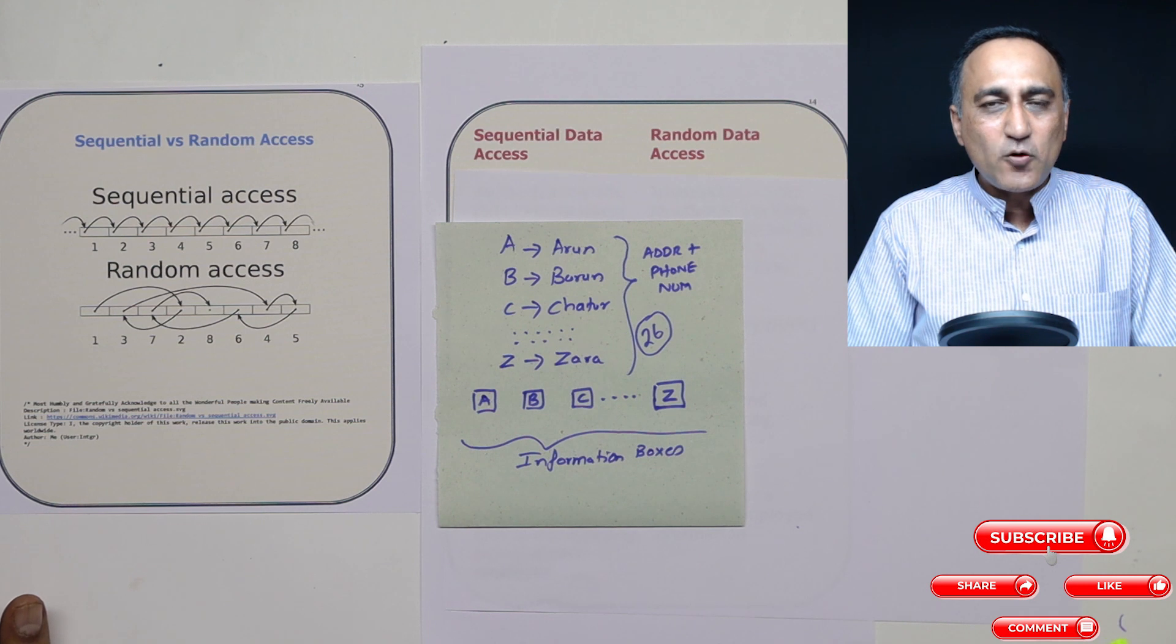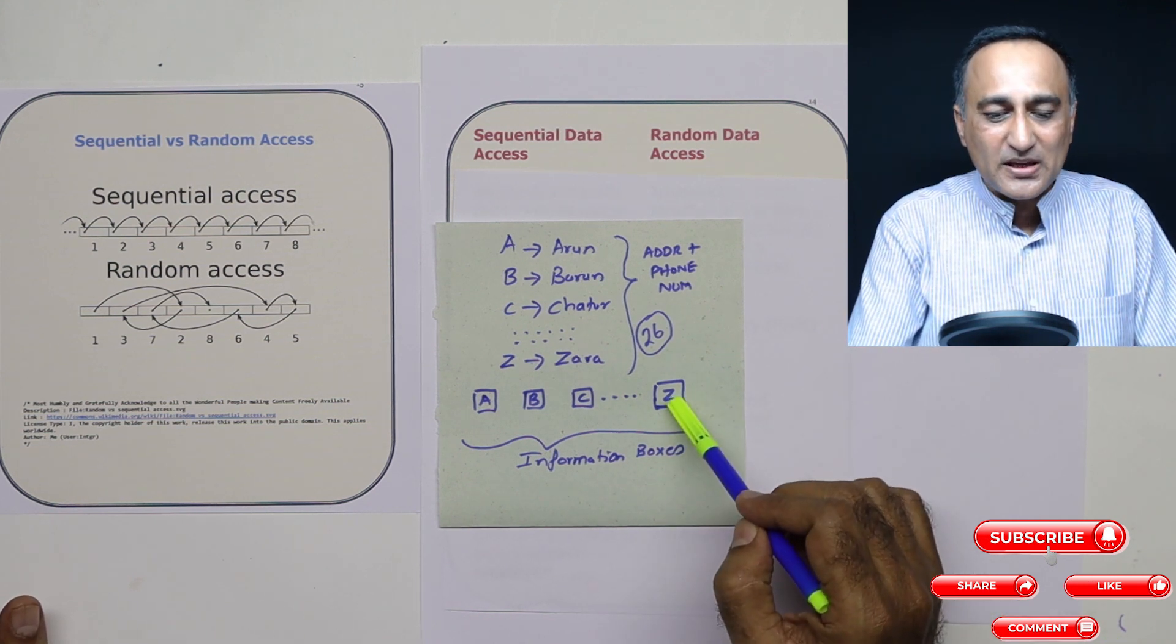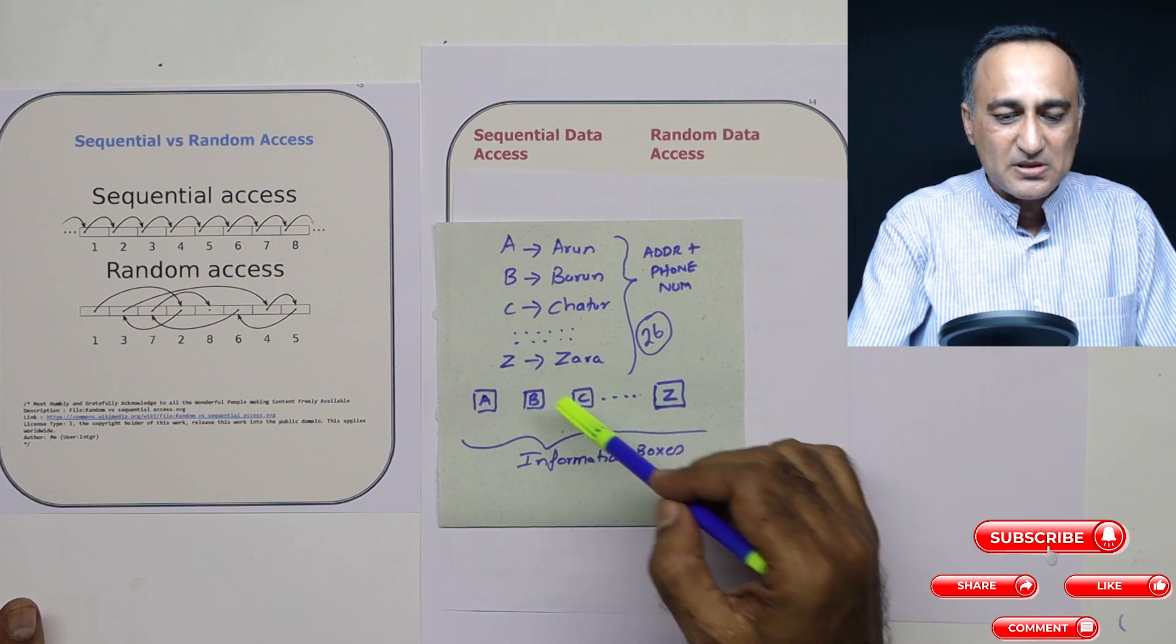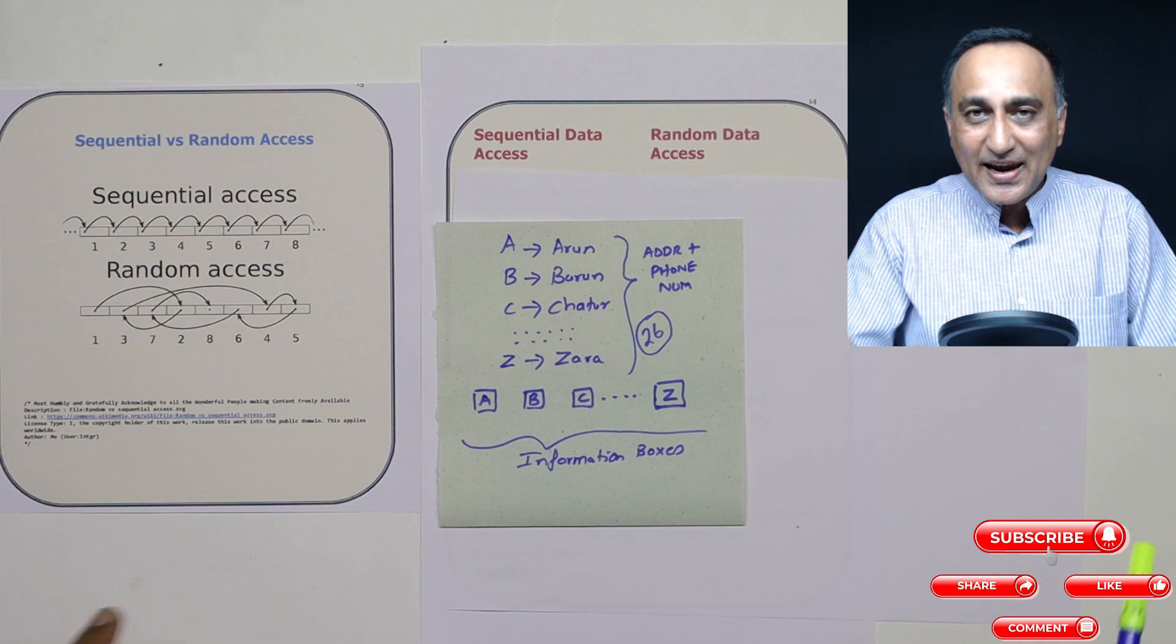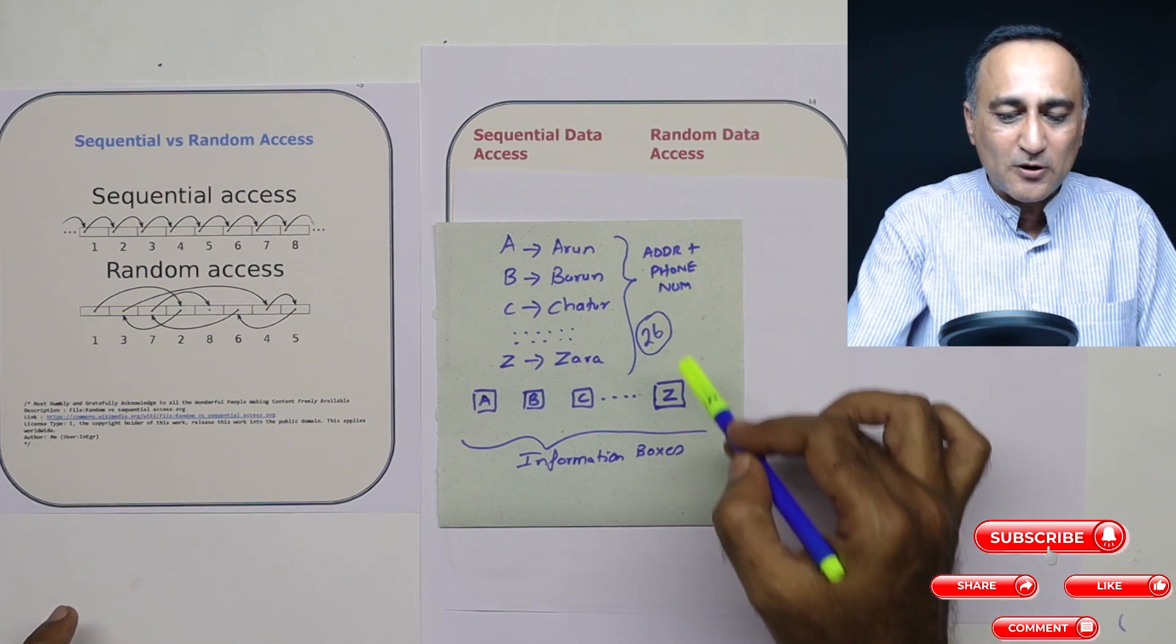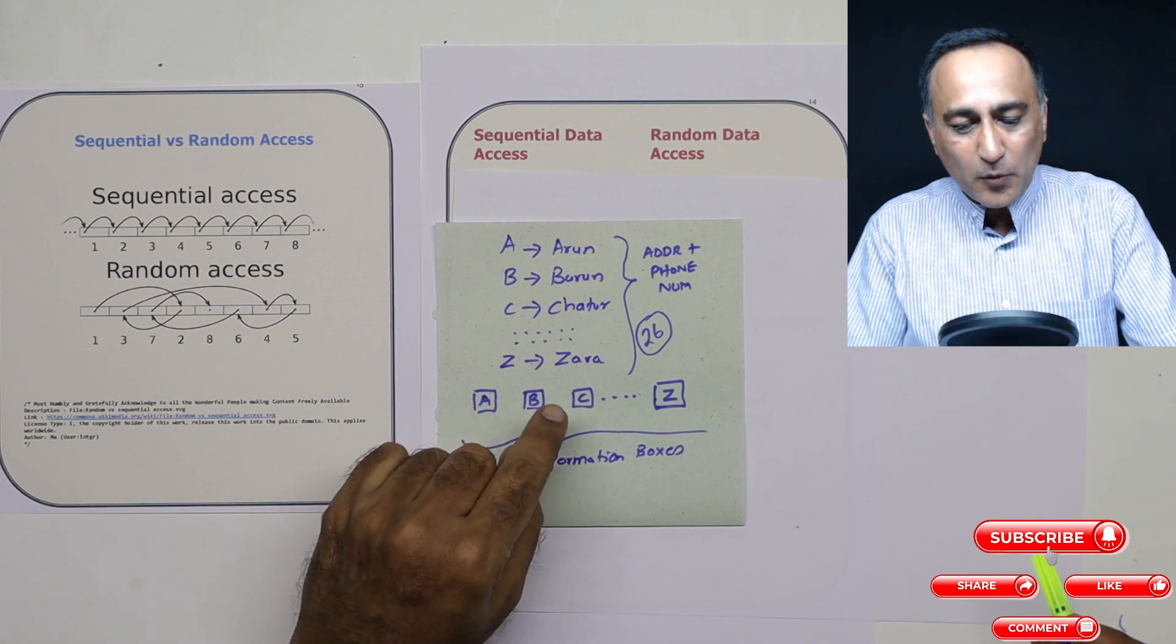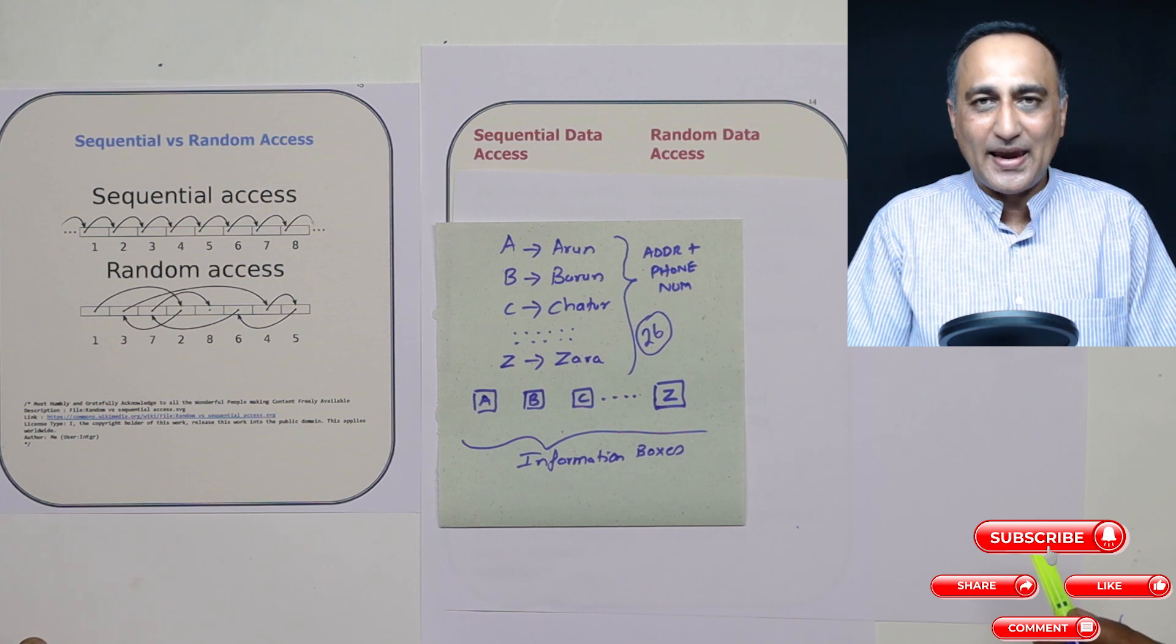Now I ask him, can you help me get Zara? He can't go here and get me Zara because he has been careless. Maybe Zara is in B, maybe Zara is in C. So he has to open each and every box and check for the contents to see if it contains the name and address and phone number of Zara. Here I have to check every box to find out Zara. This is known as sequential access.